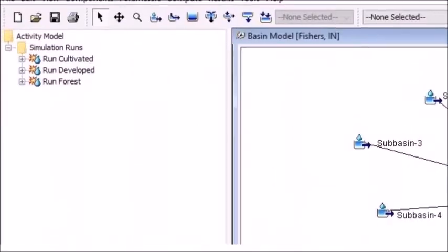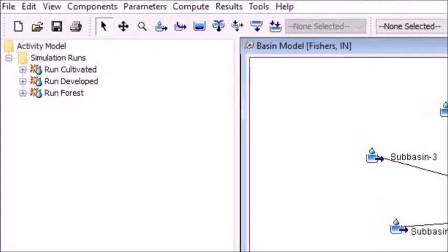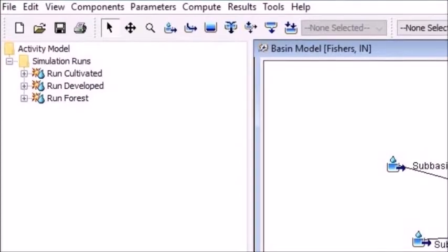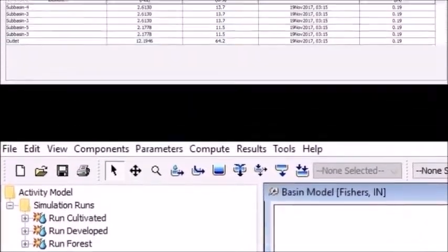I then created three separate runs: one for forested land, one for cultivated land, and one for developed land.